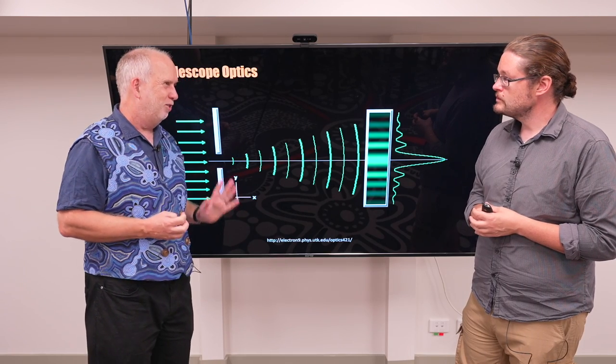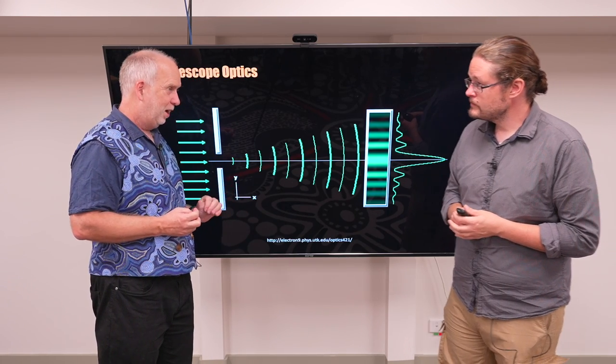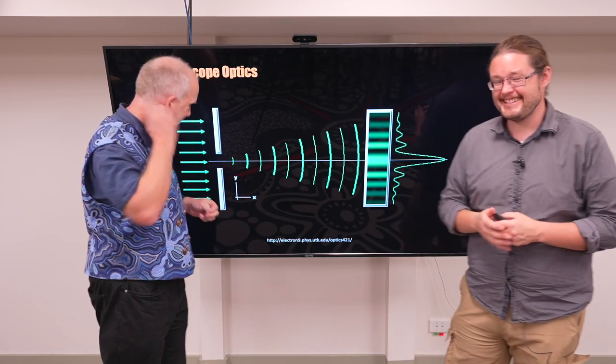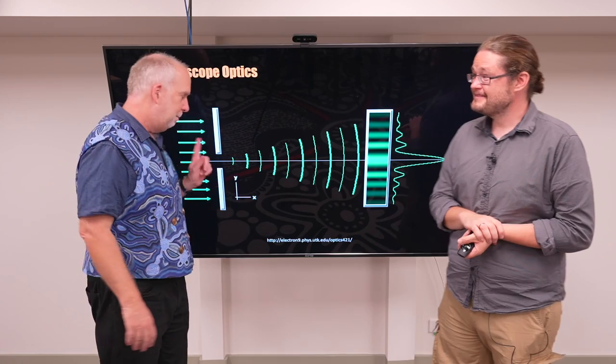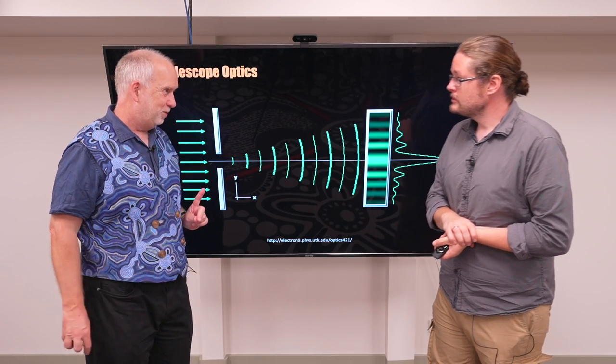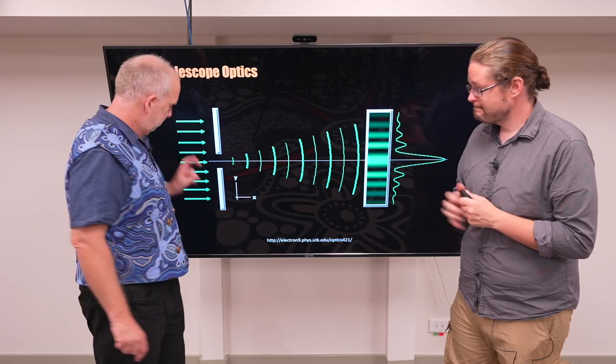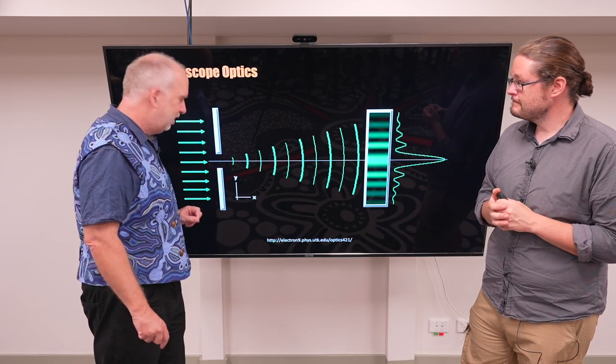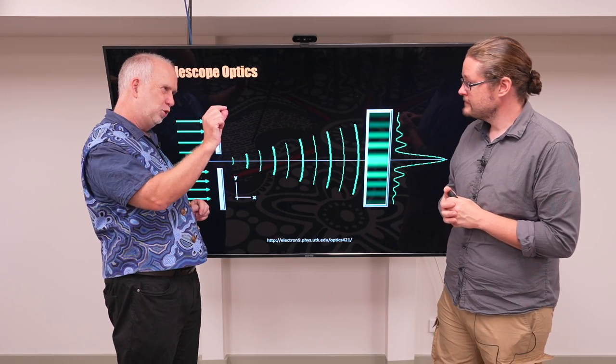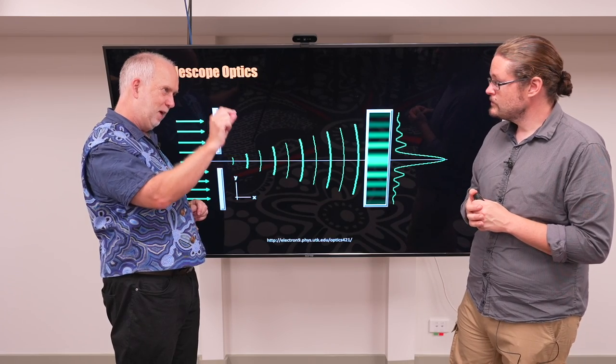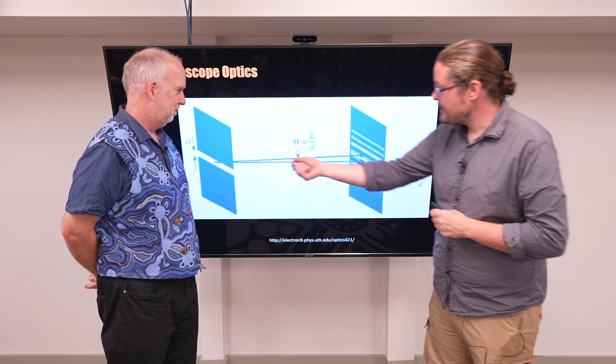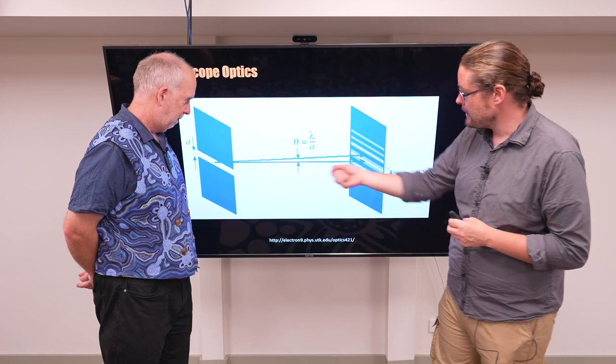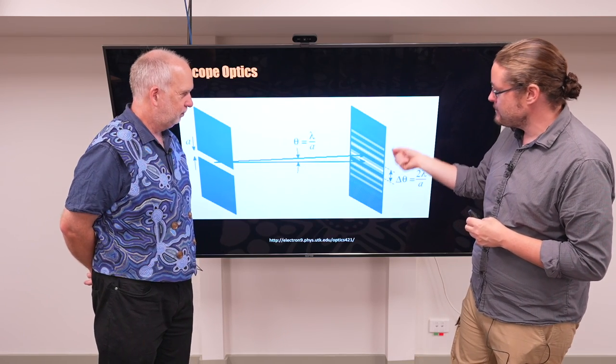So in some ways that diffraction of waves is very good. Otherwise you couldn't get mobile phones in buildings and you couldn't yell to your friend around a corner. But it's not so good for telescope optics because it means that the light tends to bend. So you don't get the perfectly sharp image. The image is blurred out by the light bending as it goes into the mouth of the telescope. As that light comes through these slits, it tends to bend.